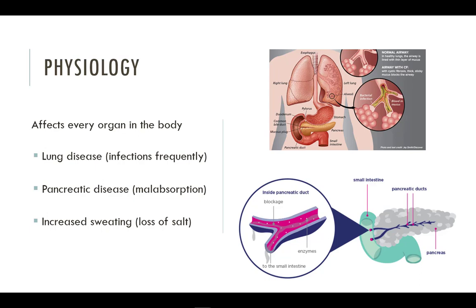In the GI system, the small ducts connecting the pancreas and liver to the small intestine are blocked, inhibiting bile and digestive enzymes from reaching food. Without digestion, nutrients from food cannot be absorbed.